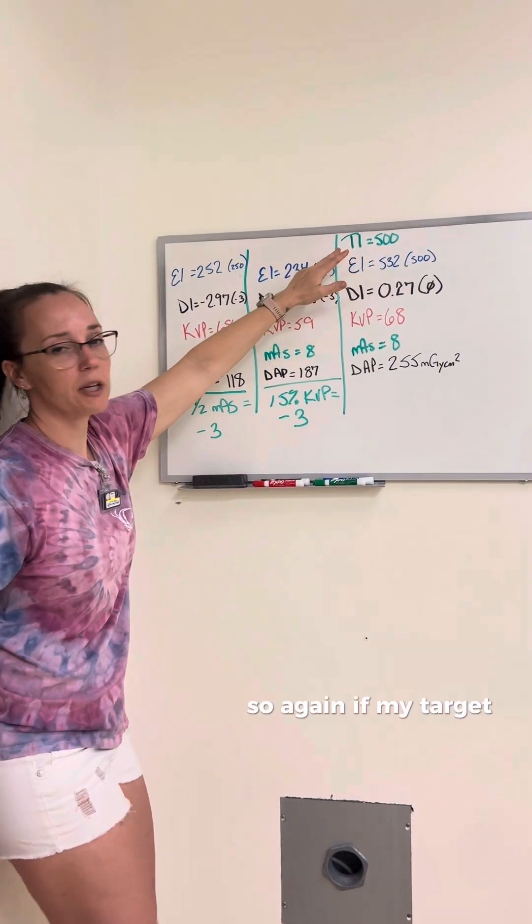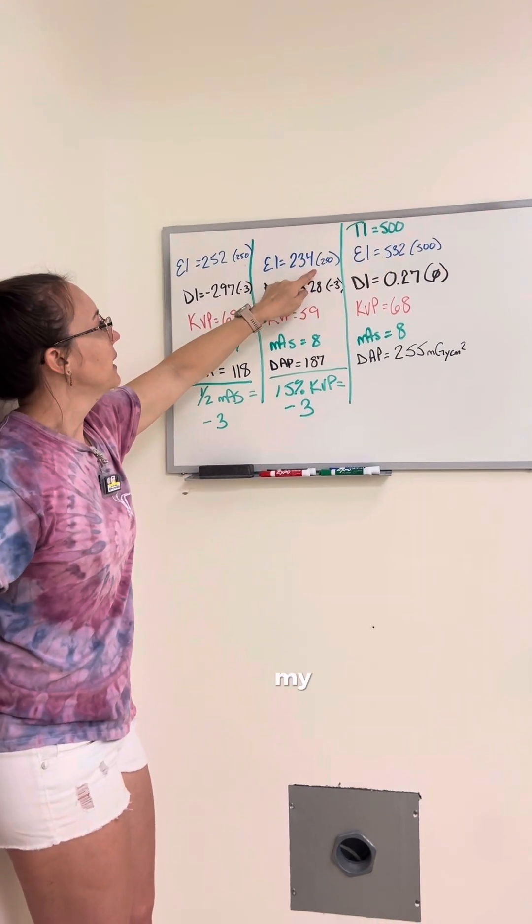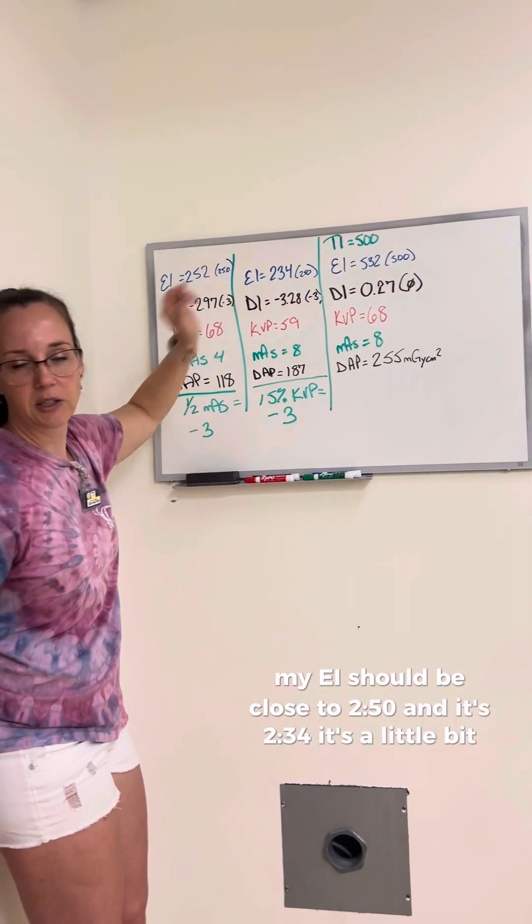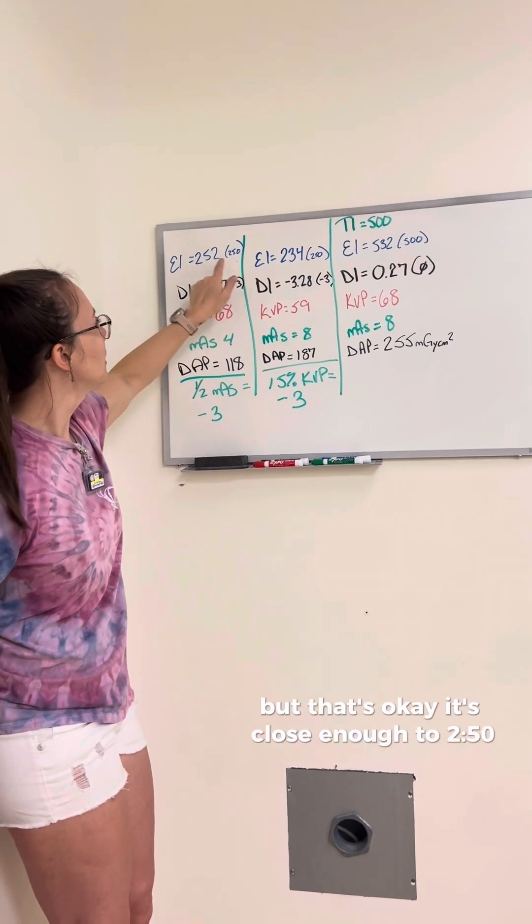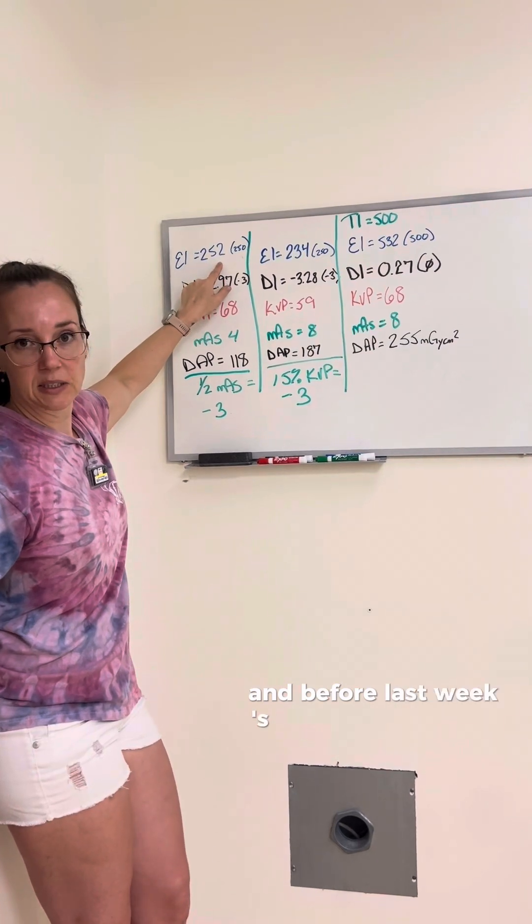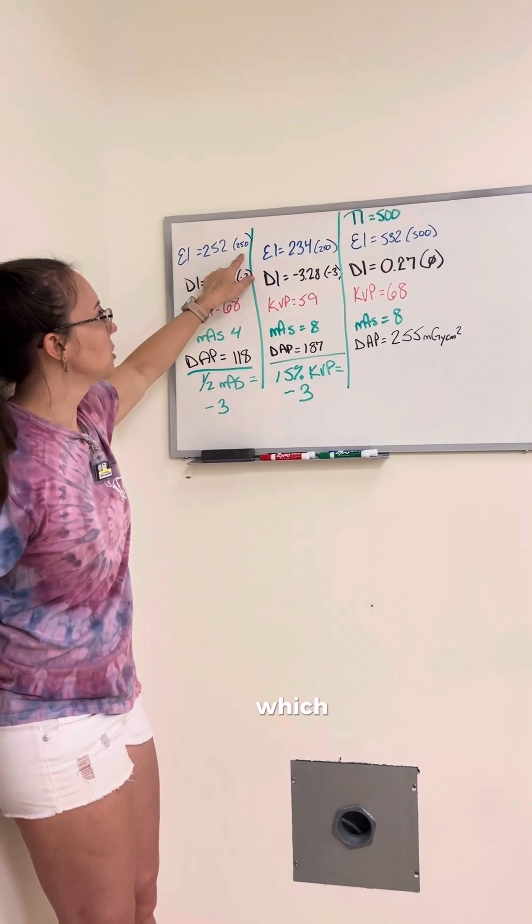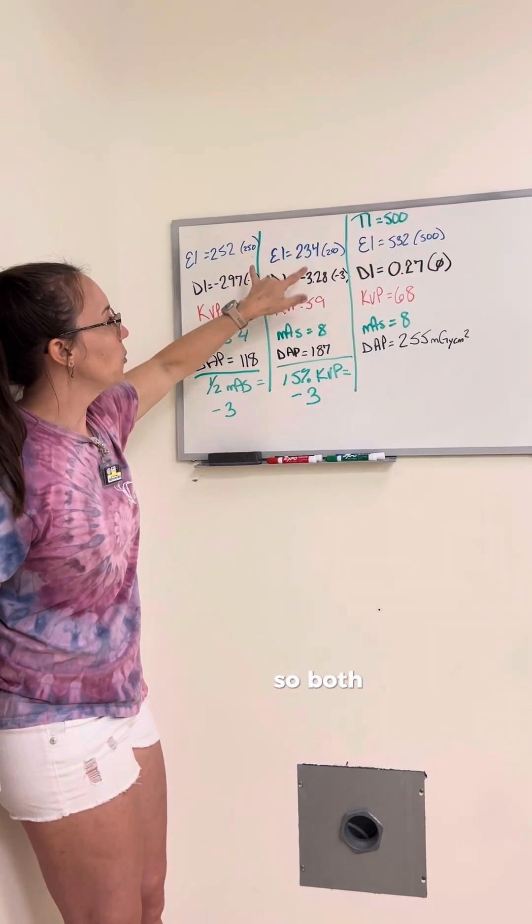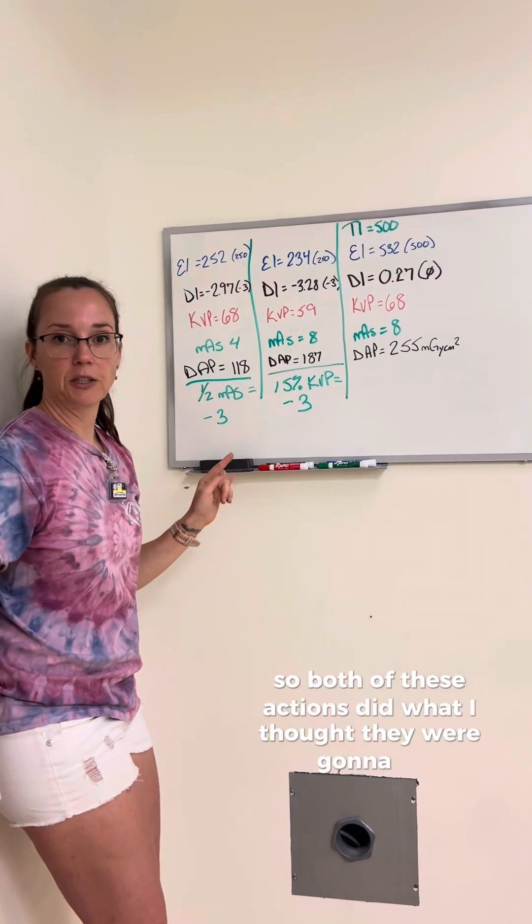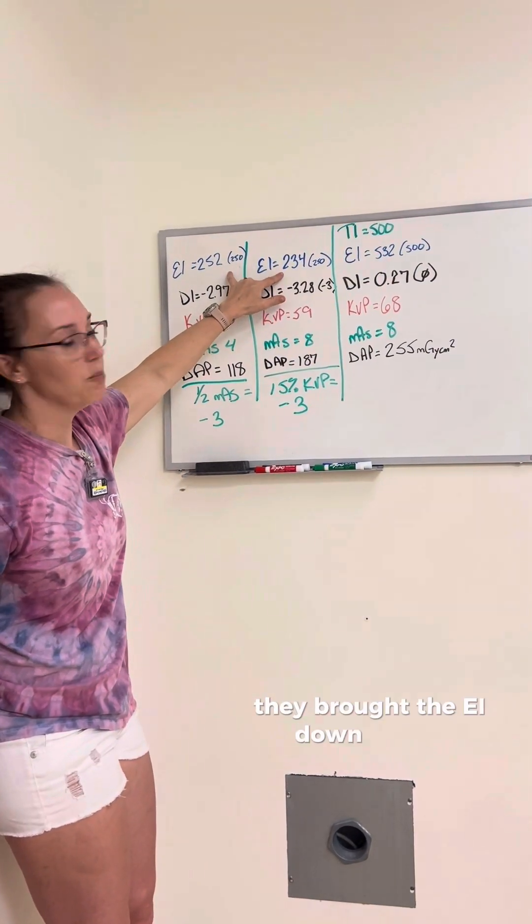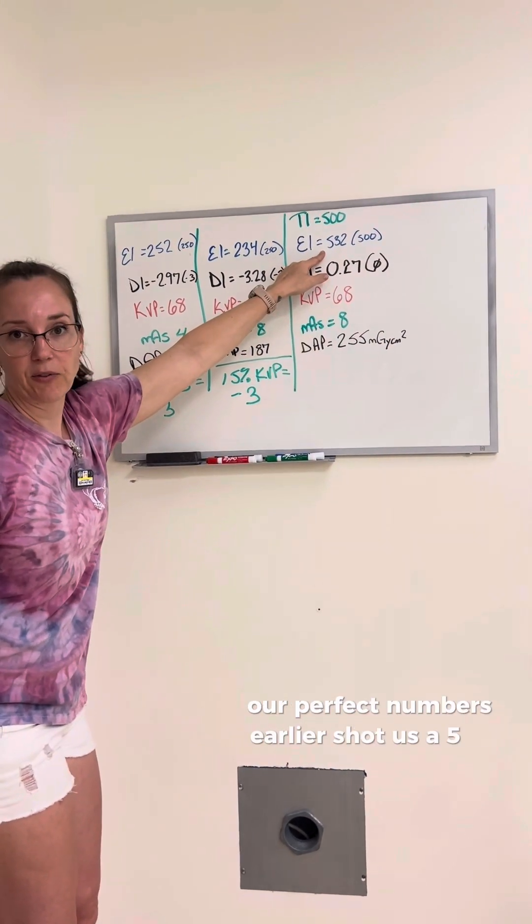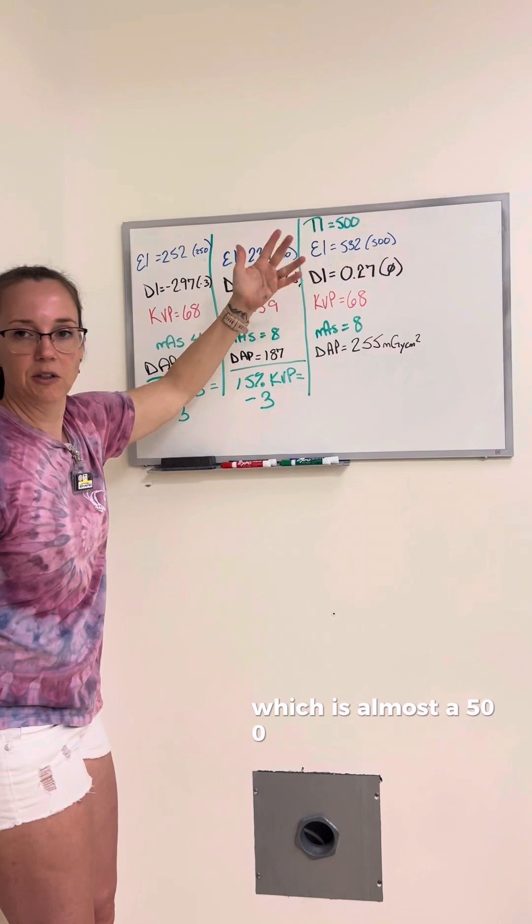So again, if my target was 500, my EI should be close to 250, and it's 234, it's a little bit lower, but that's okay, it's close enough to 250. And before, last week's experiment was a 252, which again is very close to 250. So both of these actions did what I thought they were going to do. They brought the EI down by half. Our perfect numbers earlier shot at the 532, which is almost a 500, close enough.